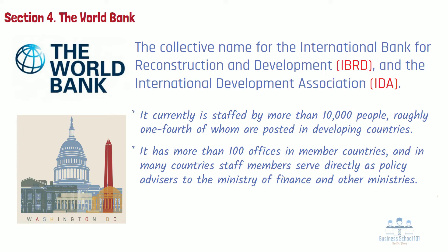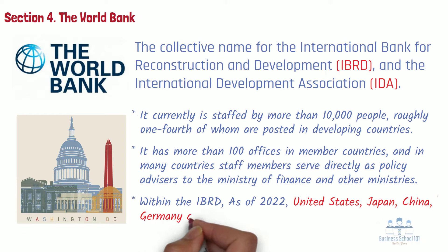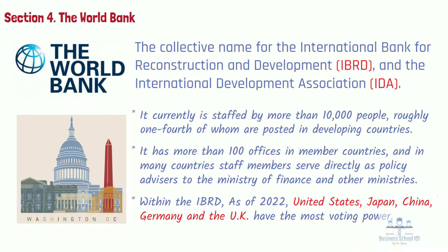The bank has consultative as well as informal ties with the world's financial markets and institutions, and maintains links with non-governmental organizations in both developed and developing countries. Within the IBRD, as of 2022, the U.S., Japan, China, Germany, and the U.K. have the most voting power. The voting power is based on a country's capital subscription, which is based in turn on its economic resources. Typically, the wealthier and more developed countries constitute the bank's major shareholders and thus exercise greater power and influence.